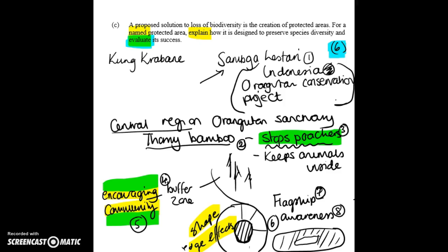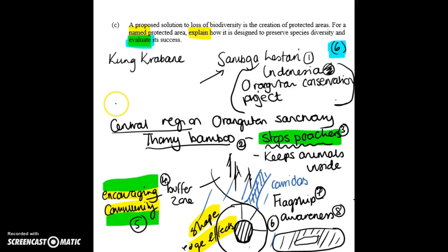Some limitations of this reserve: outside the reserve there is no orangutan habitat, so ideally we would build more reserves and link them by corridors, but that's currently lacking. Poaching still goes on — perhaps not inside the reserve itself, but overall the reserve has only a small impact on preserving species diversity more broadly.